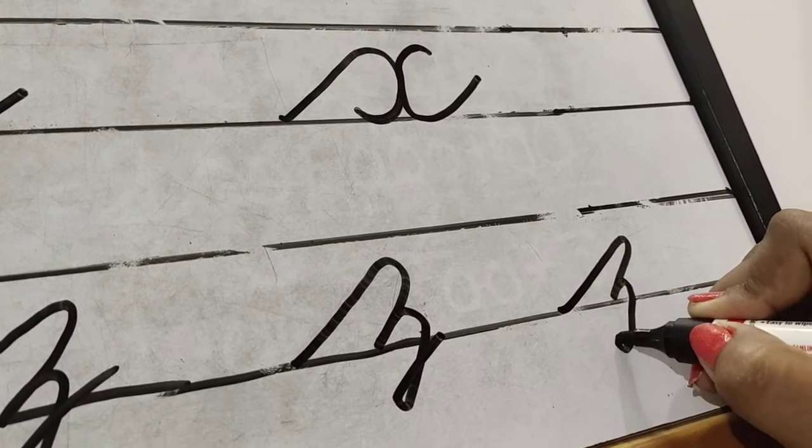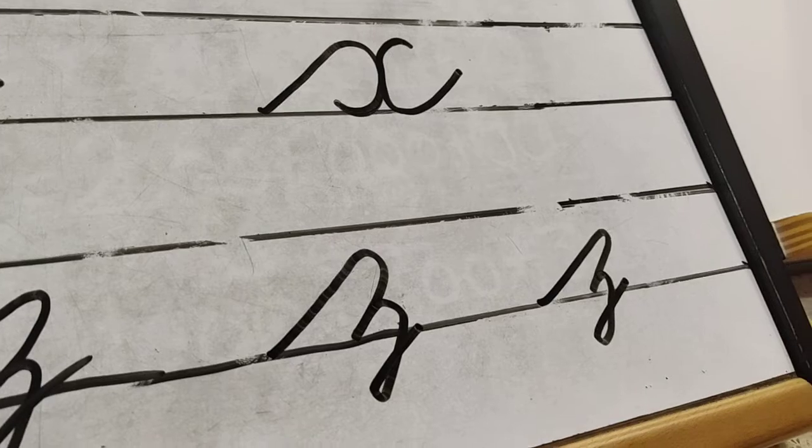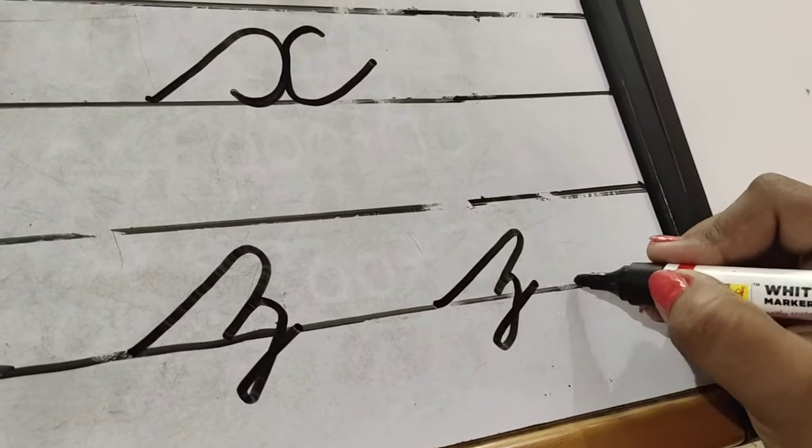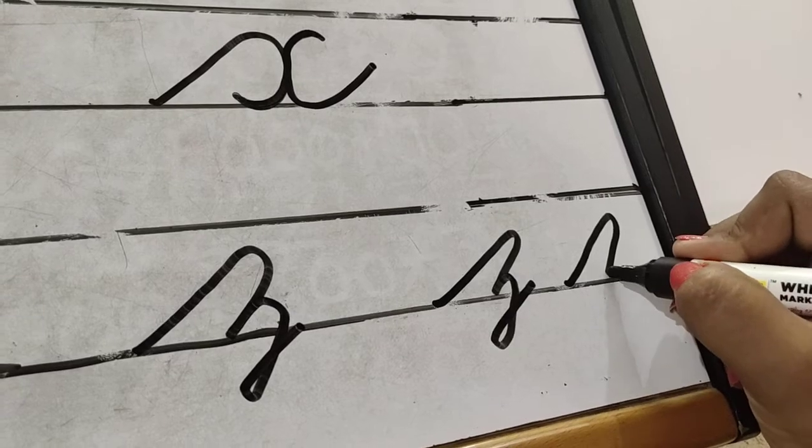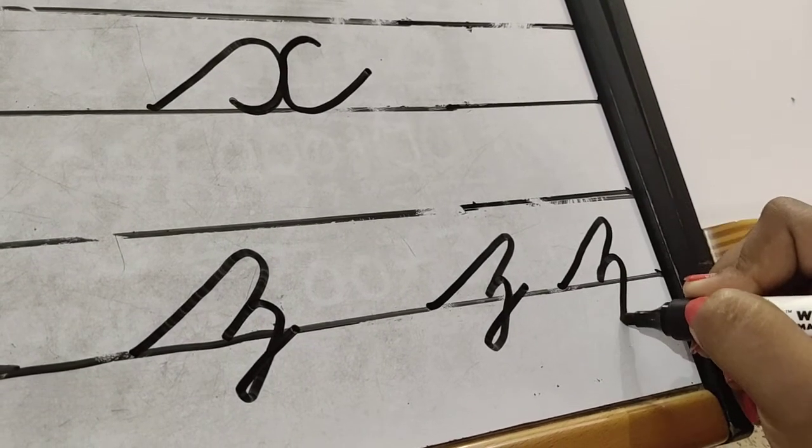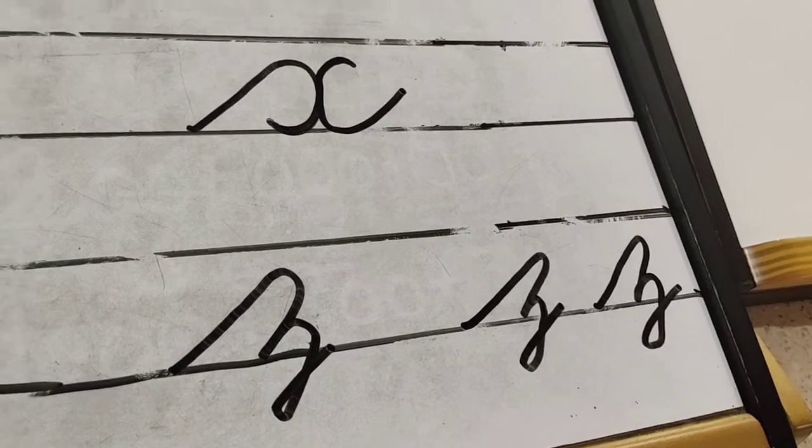Once again, see the lower line touch, go up, make a curve, come back, touch. Again, isi ko phir se curve karen, niche aayenge and this is Z.